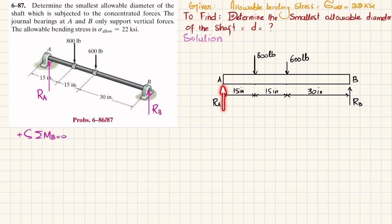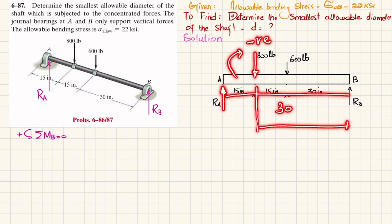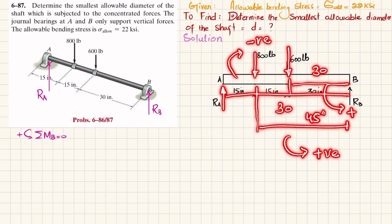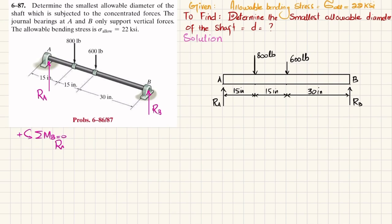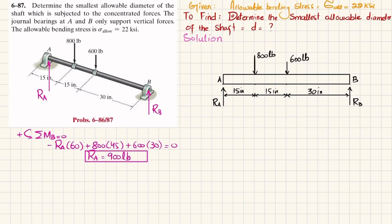About point B: the first moment is due to Ra with a perpendicular distance of 30 inches, producing a clockwise moment, so it will be negative. The second moment is due to 800 pounds with a perpendicular distance of 45 inches, producing counterclockwise, so positive. The third moment is due to 600 pounds with a perpendicular distance of 30 inches, also counterclockwise and positive. So: −Ra×60 + 800×45 + 600×30 = 0. Solving this gives Ra = 900 pounds.